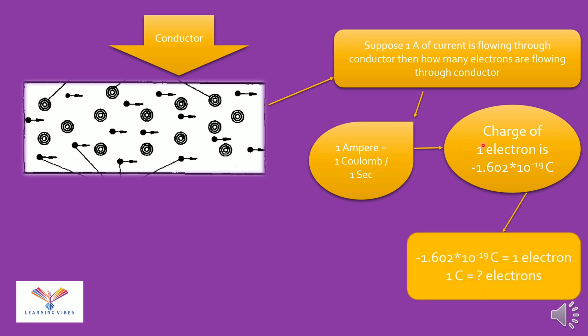So from this we can see that if this much of charge, this much Coulomb of charge is equal to 1 electron, then 1 Coulomb is equal to how many electrons? By simple cross multiplication we can get the number of electrons.